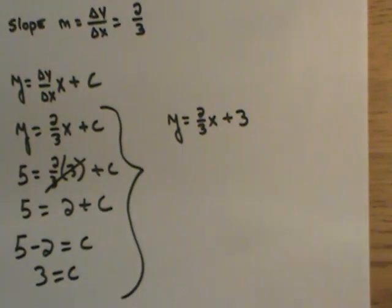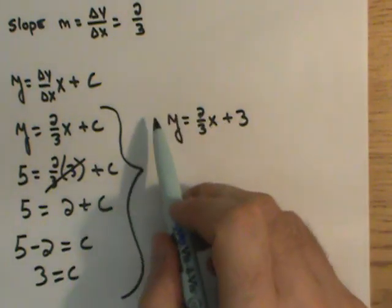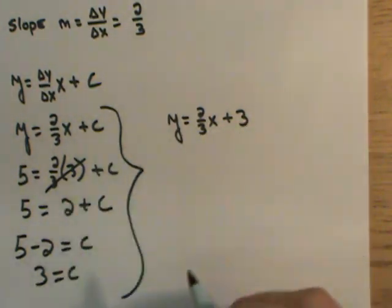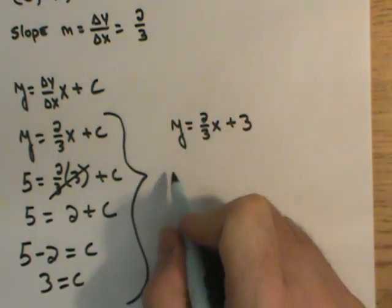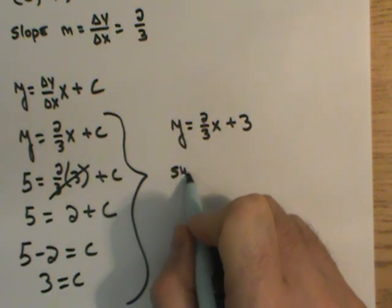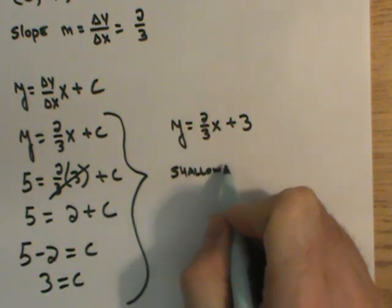To describe this, see here you have your equation now. Slope, intercept. To describe it, I look at the slope and I would say it has a shallow incline.